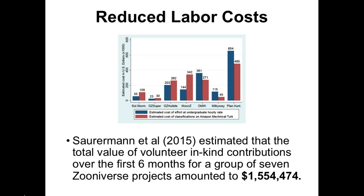In the US, Henry Sourman and colleagues estimated the total value of volunteer in-kind contributions for the first six months alone across seven projects for Zooniverse — an online platform that includes Galaxy Zoo and Serengeti projects — was on the order of $1.5 million. This represents some really interesting cost savings potential.